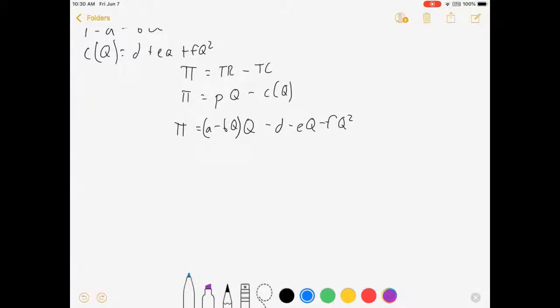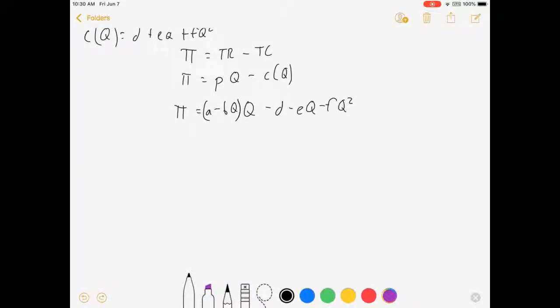So how do we maximize profit? Whether it's this specific example or if you want to do it with whatever your P times Q minus C of Q is. To maximize profit with respect to Q, I'm going to take a first order condition. Derivative of profit with respect to Q is equal to something. So I got to break this up into pieces.